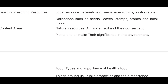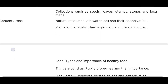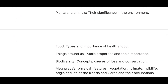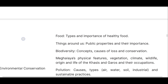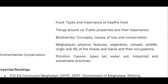Unit 6 covers Natural Resources including air, water, soil and their conservation, plants and animals and their significance in the environment, food types and the importance of healthy food, things around us, public properties and their importance, biodiversity concepts, causes of loss and conservation, Meghalaya's physical features, vegetation, climate, wildlife, and the origin and life of the Khasis and Garos and their occupations.